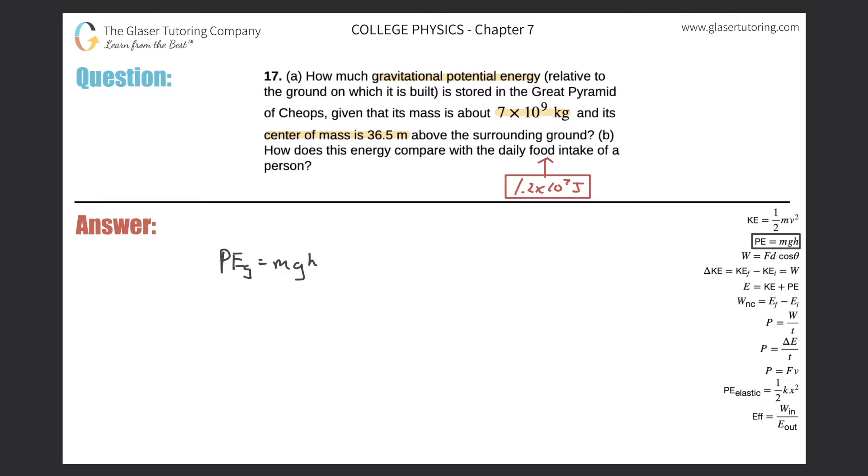All right, so in this problem they're relating the center of mass to the ground. All right, so that's just the height difference. You can think of this H as really a change in height, delta H, and you can think of this as a change in potential energy as well.